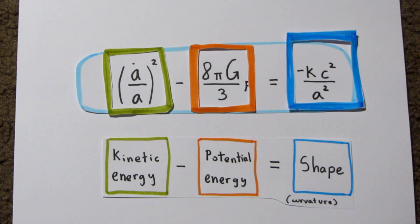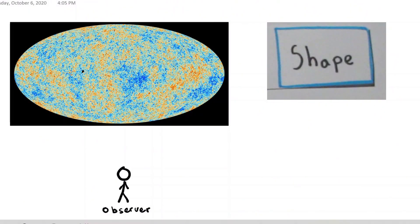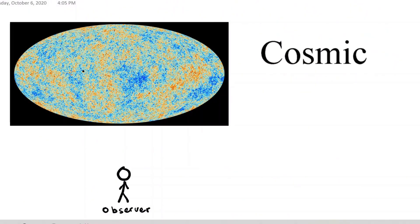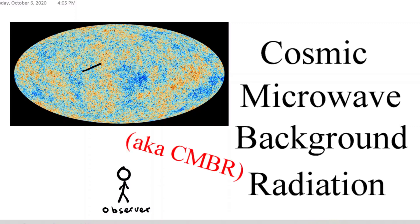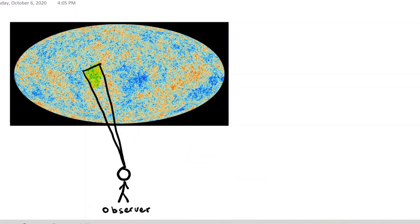Going back to the Friedman equation, we can actually find numbers for both sides of the expression. We can figure out the shape by using an image of the early universe known as the cosmic microwave background radiation. And we can make triangles between two points on the CMBR and us, just like this.